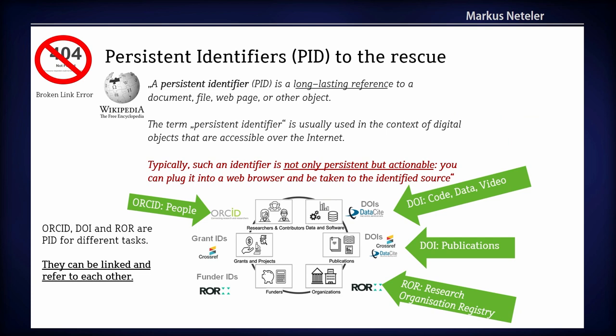There's an alternative which is based on URL — the so-called persistent identifier. Quick check: who has heard the term? The key point is it's not just persistent, but also actionable. It's a string which you can throw into any web browser, and it is guaranteed to resolve to the content behind it — can be text, video, or whatever. These persistent identifiers, or PIDs, come in different flavors.